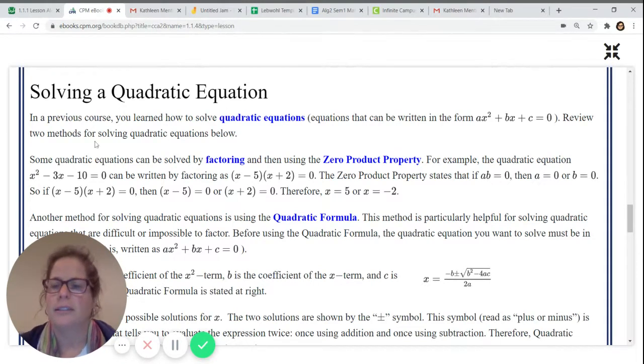It's that rectangle and that diamond that gets us from x squared minus 3x minus 10 equals zero to writing it this way: x minus 5 times x plus 2 equals zero. And rewriting it this way is what allows us to use zero product property. Since we have two things that multiply to zero, we can set each of those separate factors equal to zero.